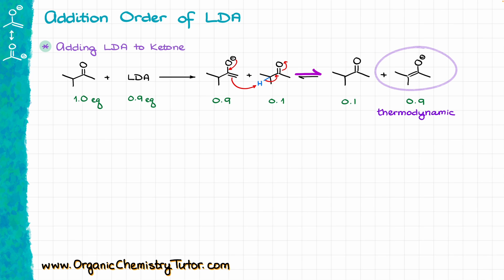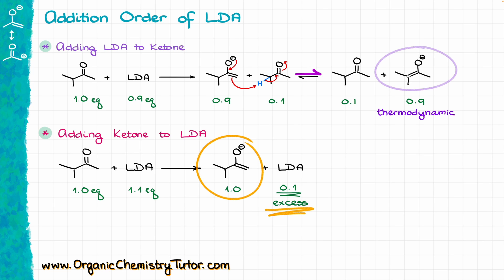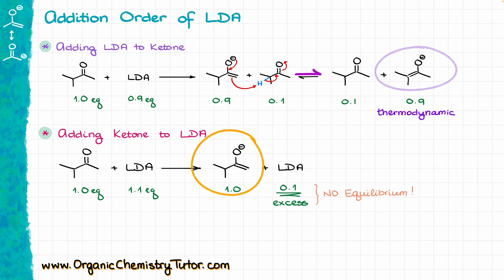However, if we have the opposite situation — adding ketone to LDA so that LDA is constantly in a huge excess — represented as one equivalent of ketone and 1.1 equivalents of LDA, once the reaction finishes I have 100% of my kinetic enolate and an excess of LDA on top of that. This means we are not going to see any equilibrium happening here. We do not have any starting material to equilibrate, so if we are adding ketone to LDA with LDA in excess, we are going to be predominantly making our kinetic enolate rather than the thermodynamic one.